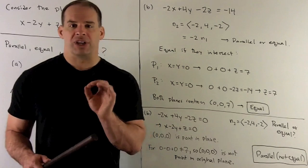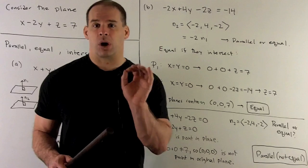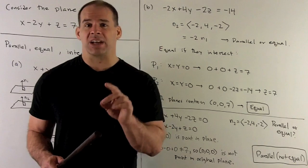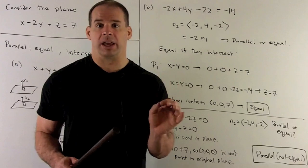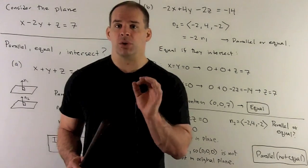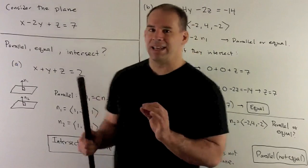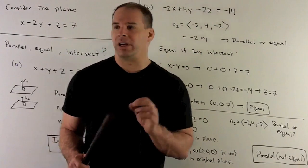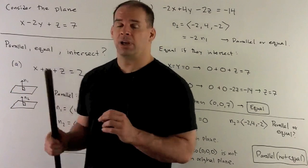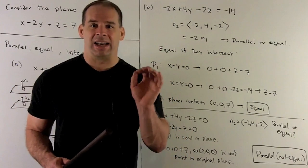Now, the way I check and see if a point is in a plane, we just put our point, the coordinates, into our equation. If the equation is satisfied, you're on the plane. If it's not satisfied, you're not in the plane. So we take 0, 0, 0, put it into this plane here. We're going to wind up getting 0 equals 7. So that's going to mean 0, 0, 0 is not a point in the original plane. So we'll have that these two planes are going to be parallel, but not equal.